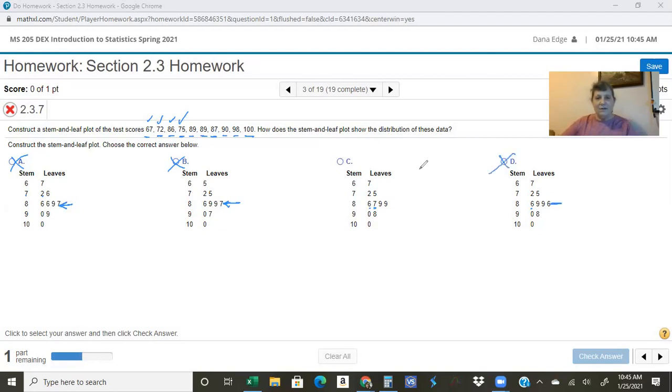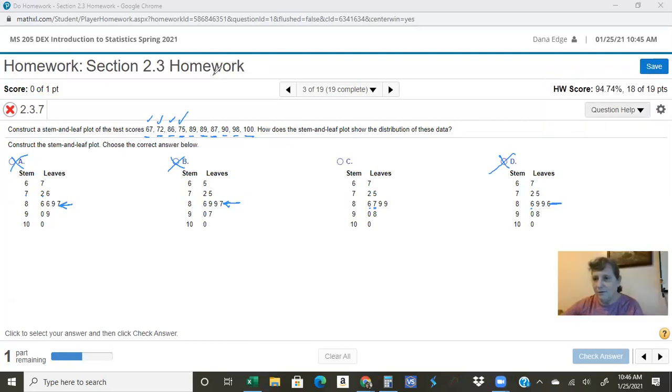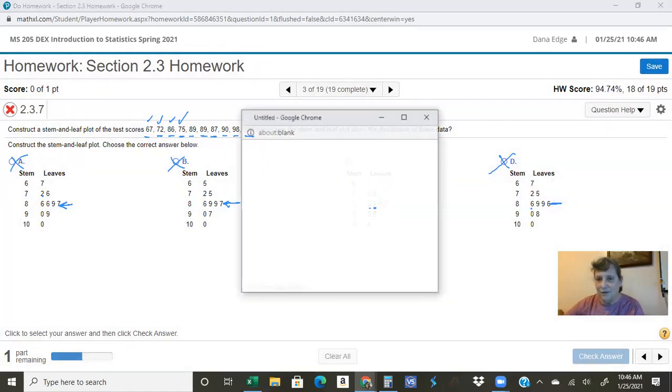So now we know it's not this one. So we know it's this one. But let me show you a trick. Now this particular problem does not have an option to load these numbers into StatCrunch. But if I come over here to question help and I click on StatCrunch.